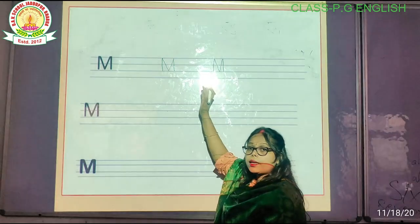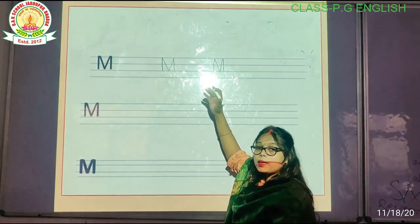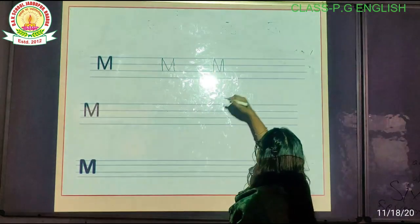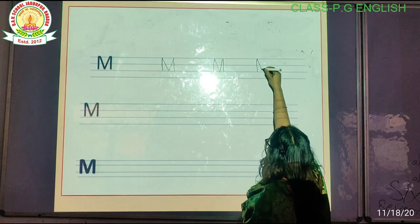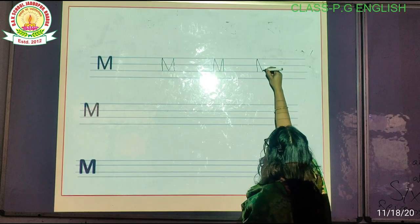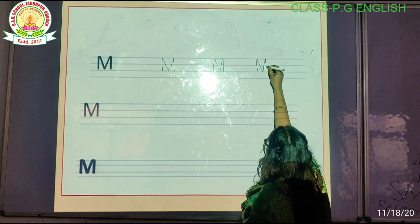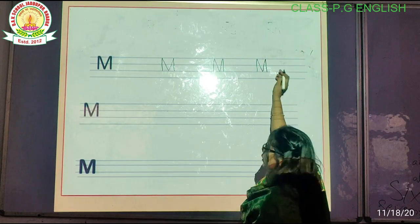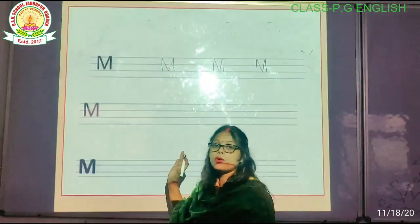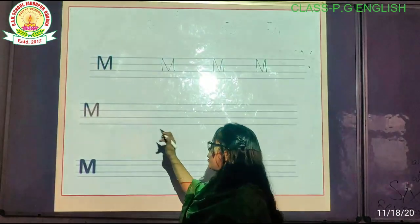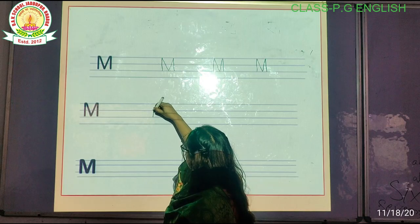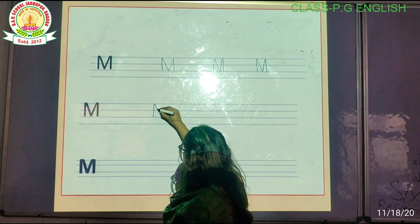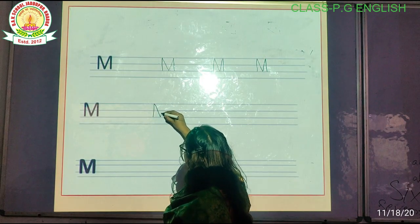आप लोग इस चीज़ को देख देख करके कॉपी पर उसको लिखें। M for monkey. M for monkey — next, this M is the same thing, we have to do in three lines.